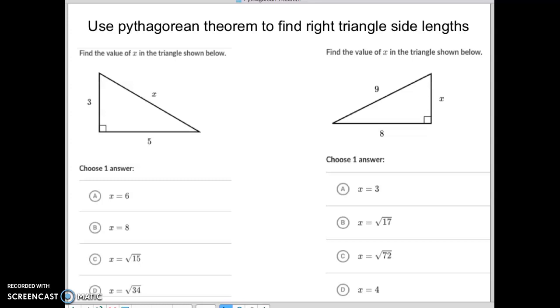All right, MathAid students, this Khan Academy is called Use Pythagorean Theorem to Find Right Triangle Side Length. However, before I start on the Pythagorean Theorem, I thought we should actually discuss what the Pythagorean Theorem is.